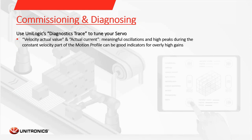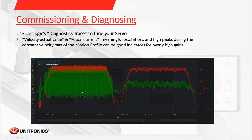You can use our diagnostics trace to tune your servo. I recommend recording the velocity actual value and the actual current value. The way to tune it is pretty easy: if you see meaningful oscillations or high peaks during the constant velocity part of the motion profile, that indicates gains are too high. On the left, you can see the green torque actual value jittering a lot and reaching relatively high values. On the right, you can see the trapezoidal velocity motion profile with the current at a relatively constant value during the constant velocity phase.